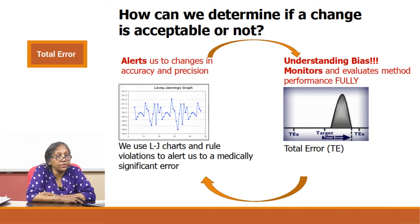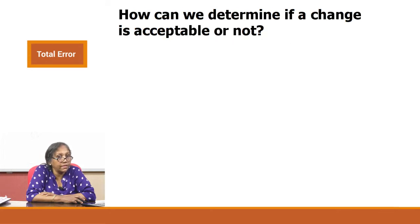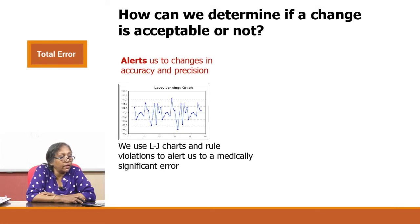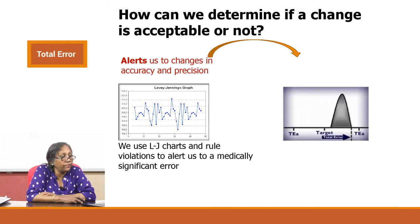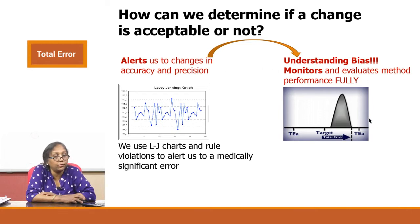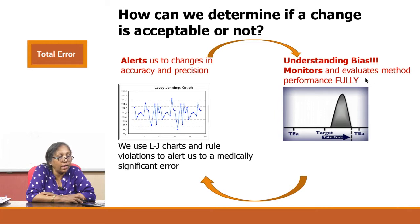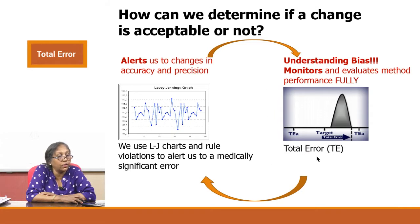How can we determine if a change is acceptable or not? Your LJs will alert you to changes in accuracy as well as imprecision. To understand bias, we found another way by understanding the true value through mechanisms like peer group data. Once you understand the bias and can calculate it and have both in hand, we can calculate the total error. This video will talk about the calculation of total error.